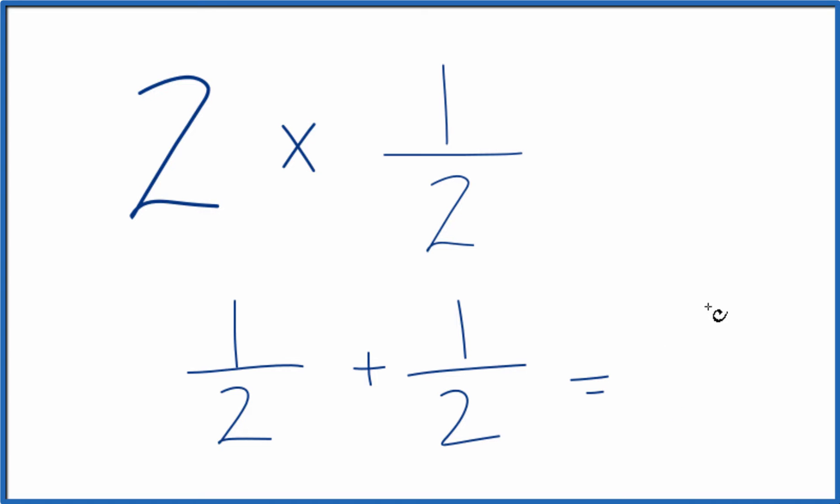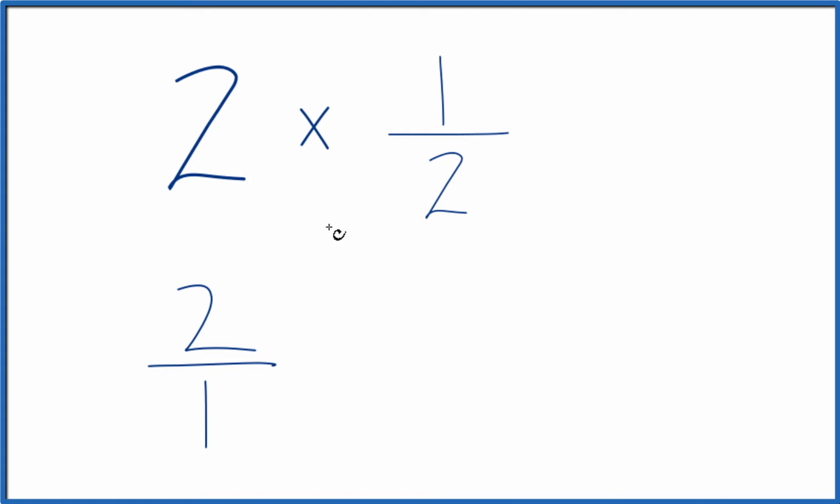The other way to think about it is instead of two, let's call this two over one. It's still two. We're just dividing by one, but now we have a fraction and we could multiply that times one-half.